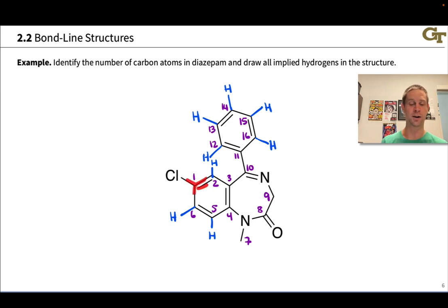1, 2, 3, and 4, and same thing at carbon 4. 1, 2, 3, and 4. So no implied hydrogens at carbons 1, 3, and 4 in this structure.